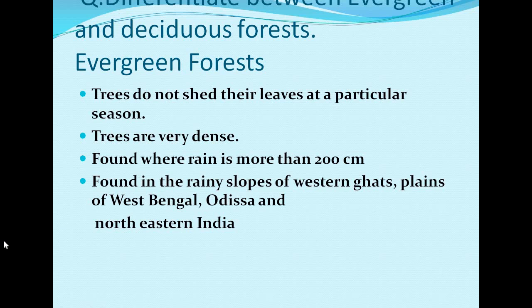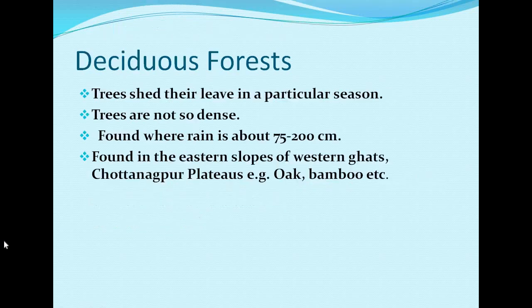The next question: differentiate between evergreen and deciduous forests. In evergreen forests, trees do not shed their leaves at a particular season and remain green throughout the year. Trees are very dense. These forests are found where rainfall is more than 200 cm, in areas like the rainy slopes of the Western Ghats, plains of West Bengal, Odisha, and northeastern India. In deciduous forests, trees shed their leaves at a particular season, trees are not so dense, and they are found where rainfall is about 75 to 200 cm. They are found in the eastern slopes of the Western Ghats and Chhota Nagpur Plateau. Examples of trees include oak and bamboo.